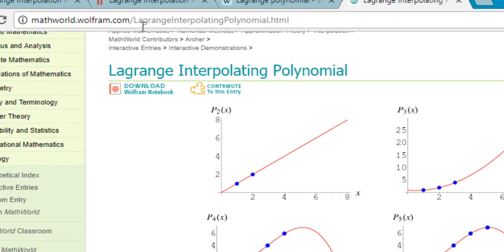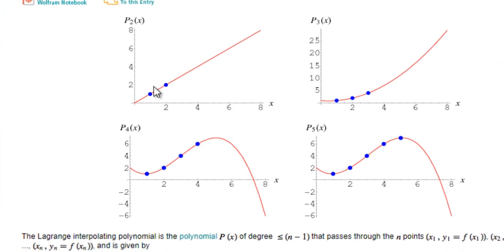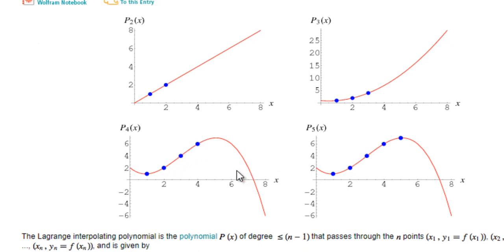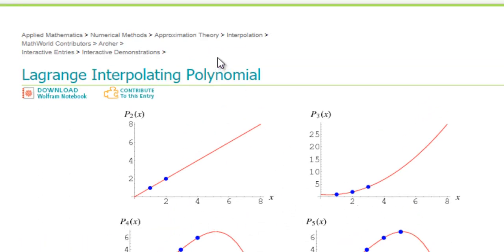And it will pass through all the given n plus 1 data points. To illustrate it graphically, you can head on to the Wolfram page for Lagrange interpolating polynomials. You can see that if you are given two data points, the best way to connect them is through a line — a linear Lagrange interpolating polynomial. If you are given three points, a degree-two polynomial would do the trick. Similarly, you can connect four or five points by a polynomial whose degree is less than or equal to one less than the number of data points.